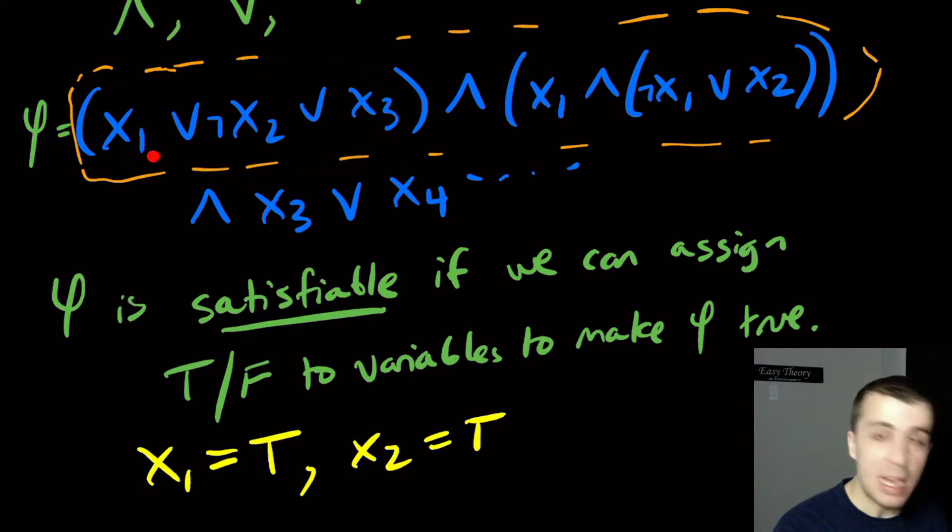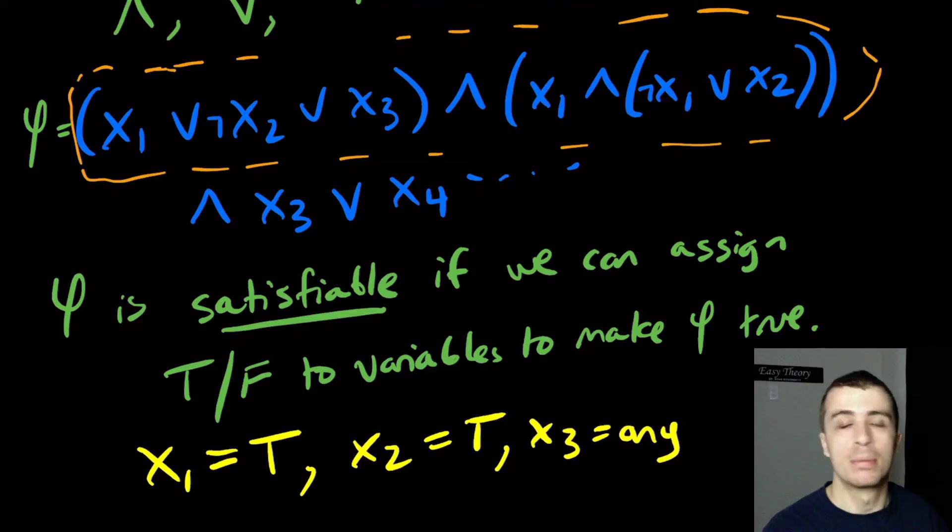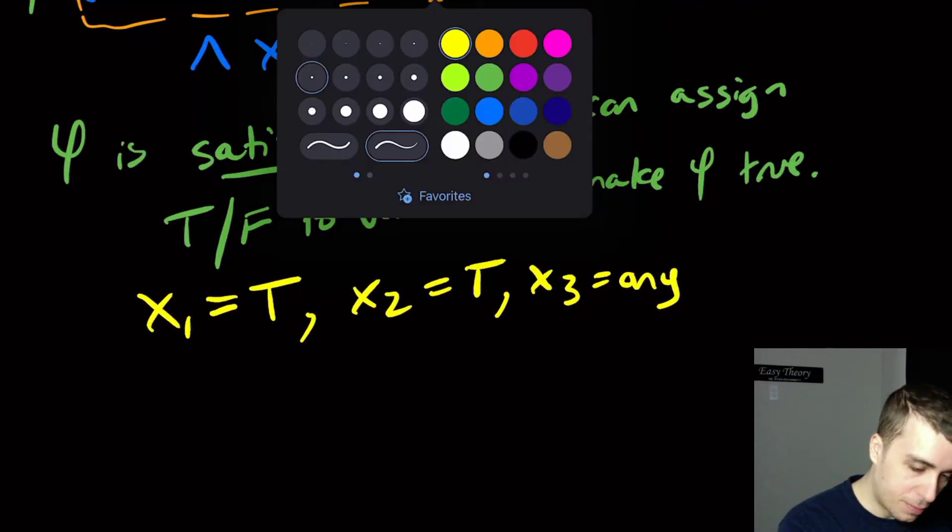And for this part, we have x1 already set to true by this, so it doesn't matter what x3 is. We can have x3 be any of the two. So you can assign this true or false, it doesn't matter. So by this assignment, or pick any assignment for x3, then this formula is set. It can evaluate to true now. Of course, I could choose a different set of assignments here, and then maybe the formula evaluates to false. So it's not the case of whether it can evaluate to false, I'm wondering whether there is any way to set it to true.